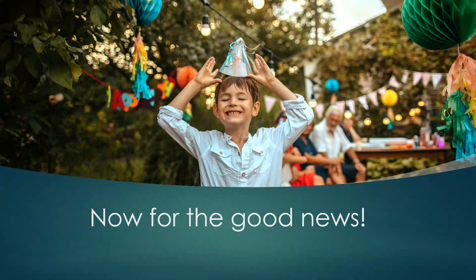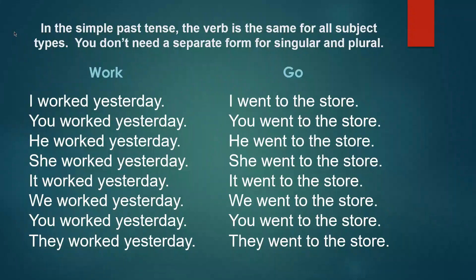Now for the good news. In the simple past tense, the verb is the same for all subject types. You don't need a separate form for singular and plural. So if you look at two verbs — work and go — the form of the verb stays the same no matter what the subject type is.